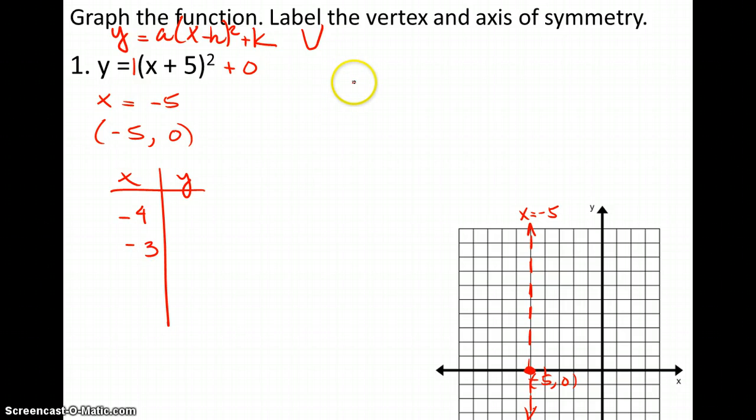So I'm going to get closer to negative 5, so I'll probably use negative 4 and negative 3. And then you'll just plug in each of these points to find out what your y values are. So y is equal to negative 4 plus 5 squared, which is 1 squared, so that's 1.